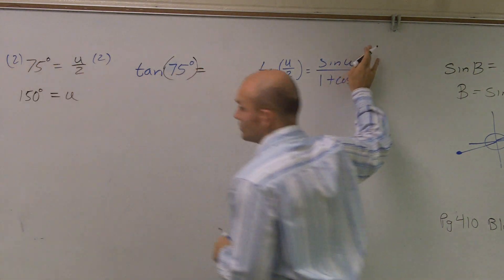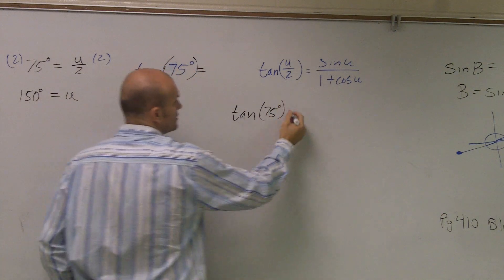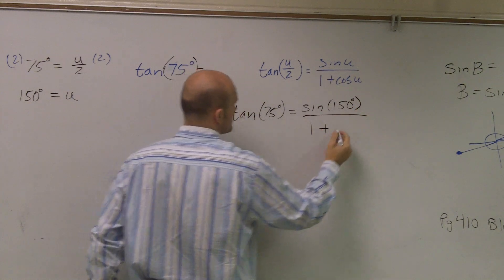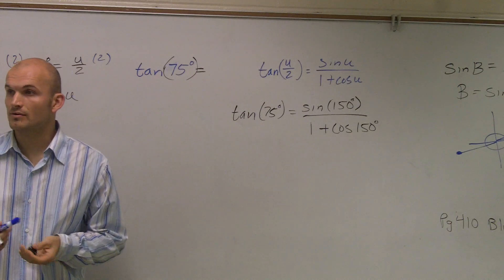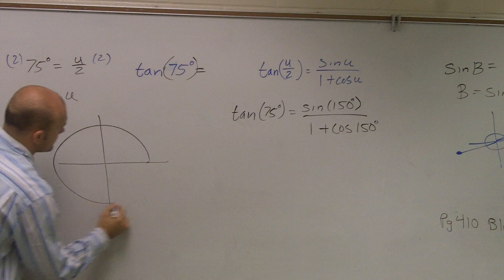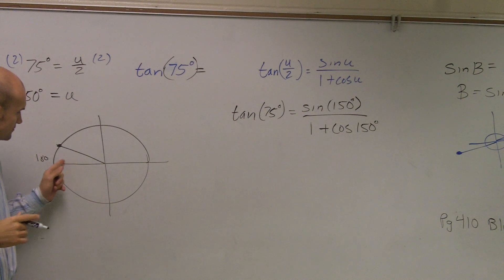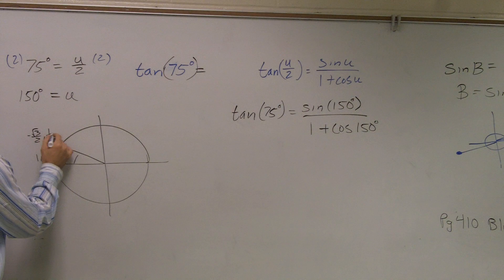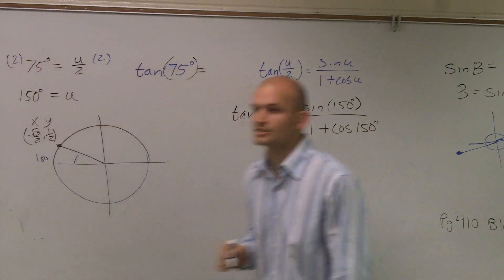So now I know what my angle is. I can plug it through there. So I'll simply write tangent of 75 degrees, which is my half-angle, equals sine of 150 degrees divided by 1 plus cosine of 150 degrees. So now the next thing is we need to figure out where 150 degrees is on the unit circle and what the values are. We really have to know our unit circle by this time. We know 180 is here, so 150 is going to be 30 degrees less — that's negative radical 3 over 2, comma 1 half as the point.